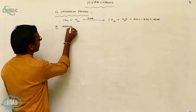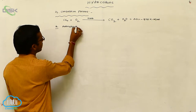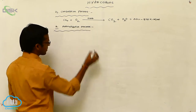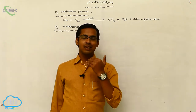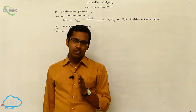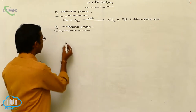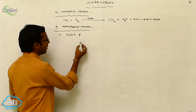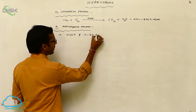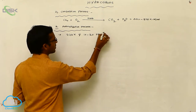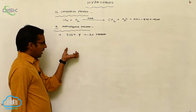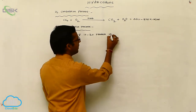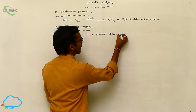And the next one is aromatization. In the aromatization process, alkanes with six or more number of carbons are heated at 773 Kelvin and 10 to 20 atmospheric pressure. The acyclic molecule is converted to a cyclic molecule to produce benzene. That benzene is our aromatic compound.